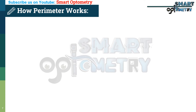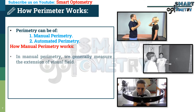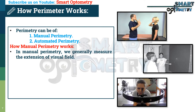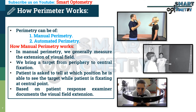Now let's know how a perimeter works. A perimeter can be of two types: manual perimeter or automated perimeter. In manual perimetry, we generally measure the extension of the visual field by bringing a target from the periphery to central fixation. The patient is asked to indicate at which position they are able to see the target while fixating at the central point, and the examiner documents the visual field extension based on the patient's response. Automated perimetry uses computer-assisted software to automatically identify visual field extension and degree of visual field defect based on patient response.